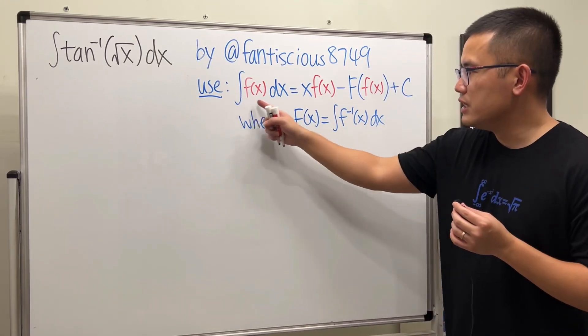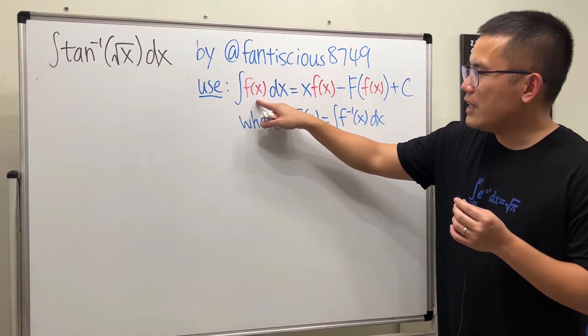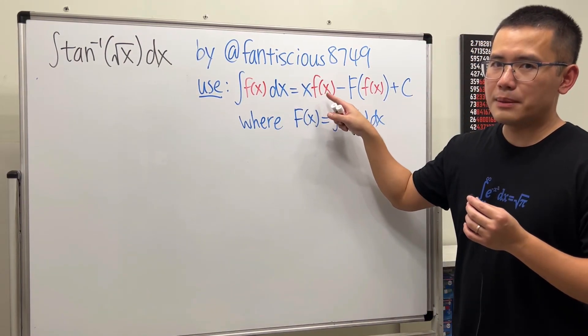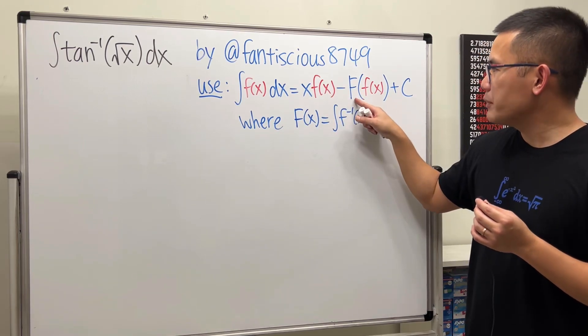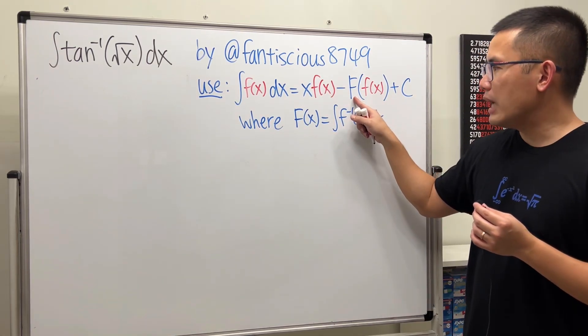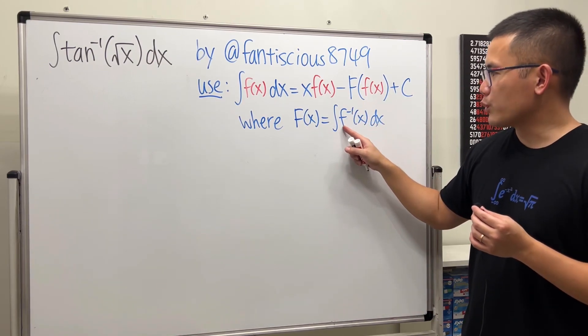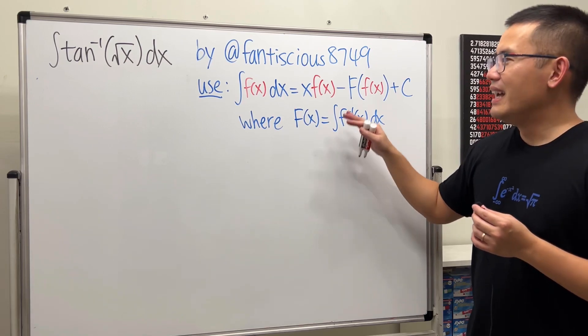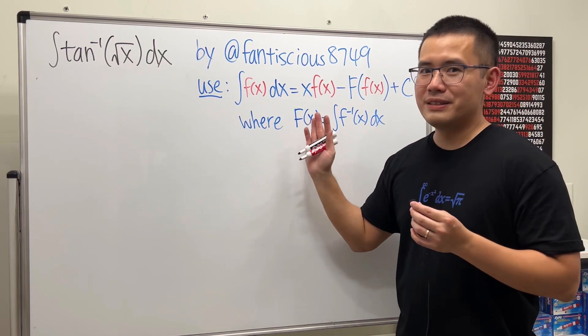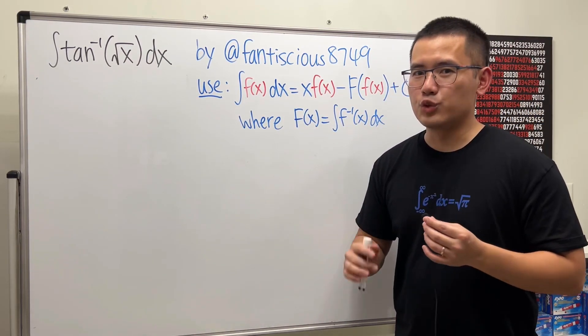The idea is to use this formula: The integral of f(x) is equal to x times f(x) minus capital F of little f of x. And the capital F is just an antiderivative of the inverse of the original little f. I actually have a proof of this in the past, so I'll link that in the description for you guys.